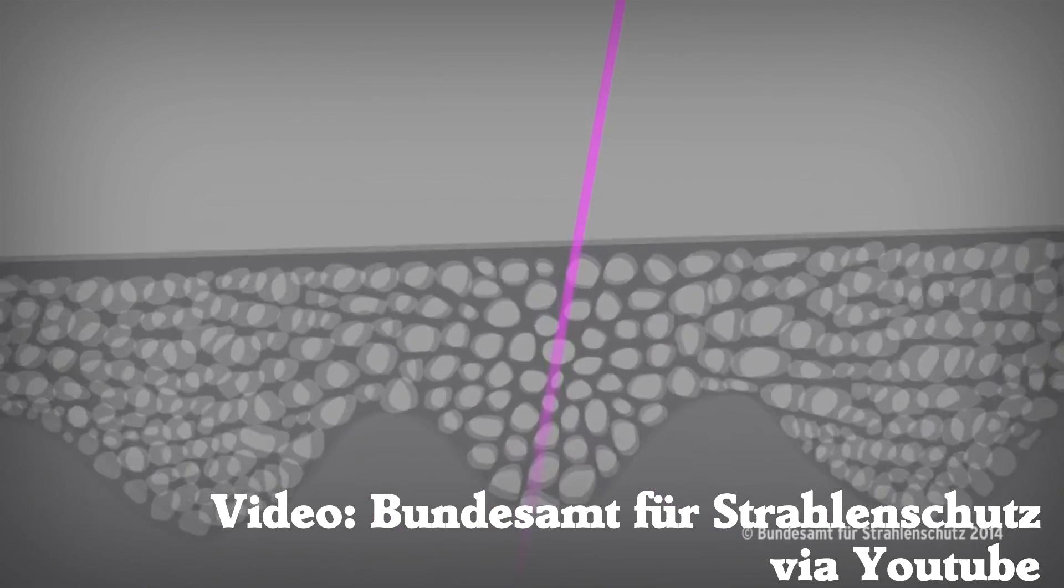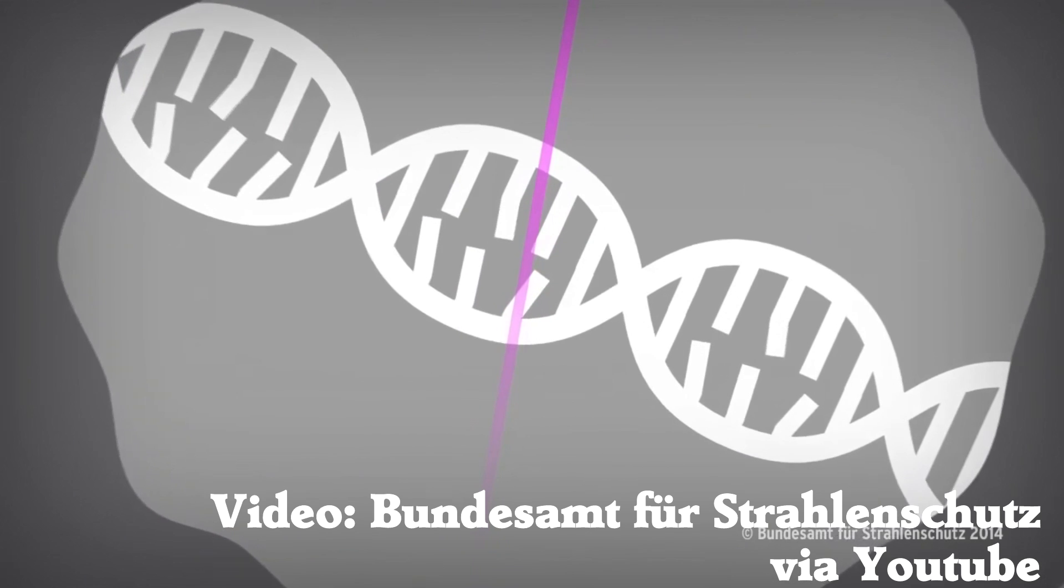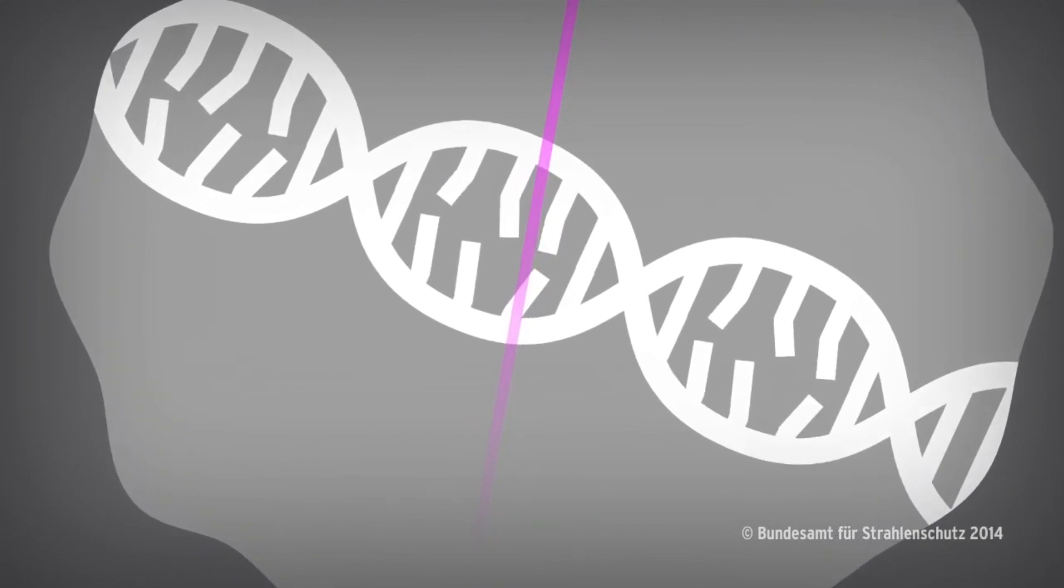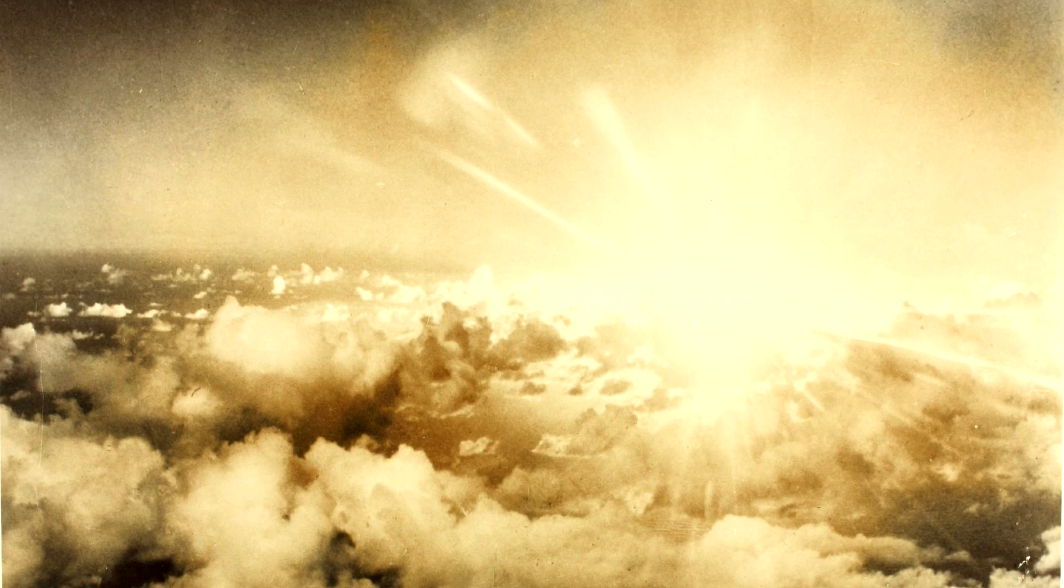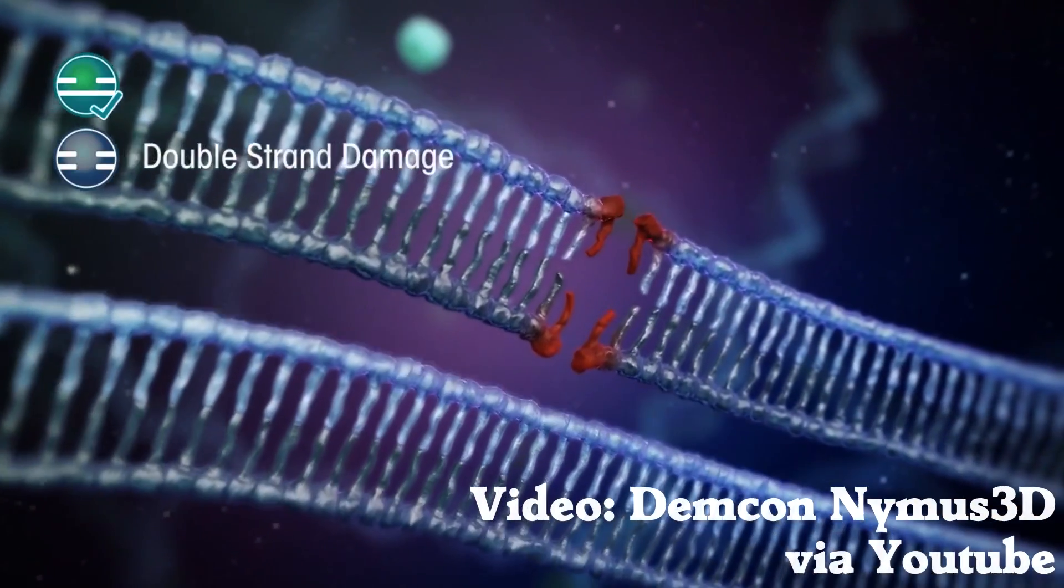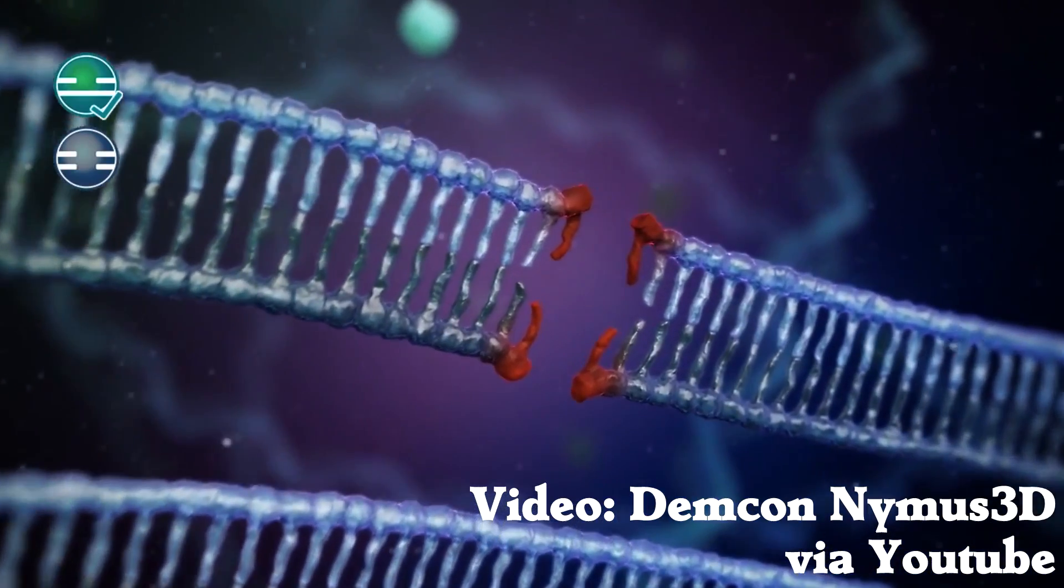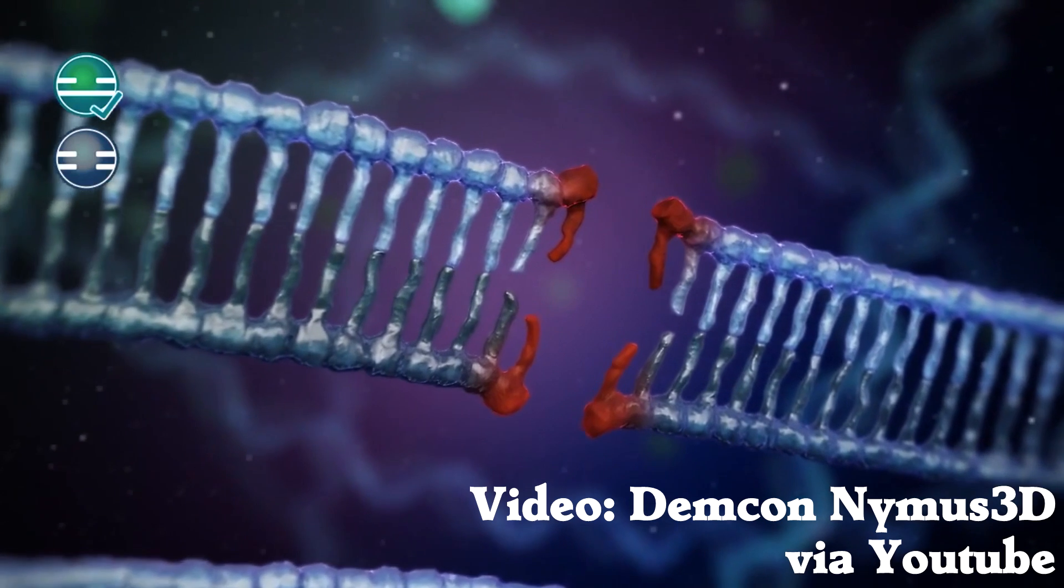UV light from the sun can bump DNA apart, which rarely causes mutations. Gamma rays have way more energy and can cause double-strand DNA breaks, which are much more likely to result in mutations and also death.